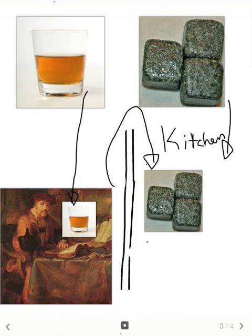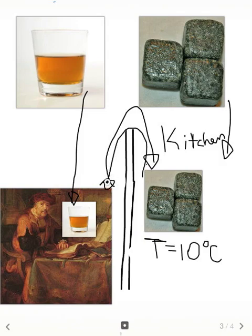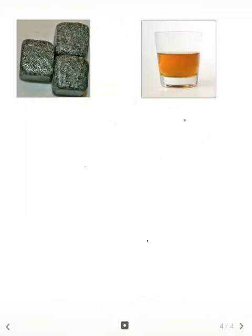You pull the thermometer out of your pocket and measure the temperature of the whiskey cubes — it reads about 10 degrees Celsius. Then you go back and hang out with the professor for the rest of the night, talking about the Byzantine era or something like that. Later, you want to figure out: what was the final temperature of the whiskey? That's what you want to solve for — temperature F, for final, of the whiskey.